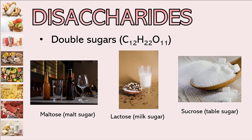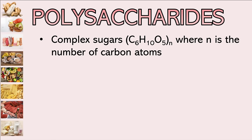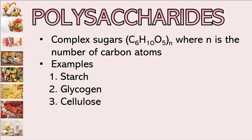Next, polysaccharides. More than two sugars combined would be considered a polysaccharide — they are complex sugars with a complex chemical formula. Examples of polysaccharides are starch, glycogen, cellulose, and chitin.